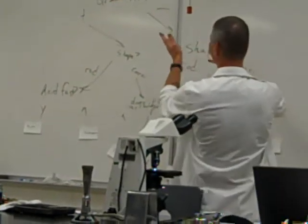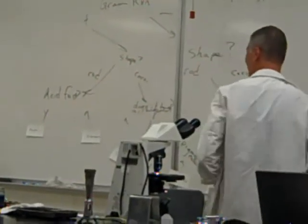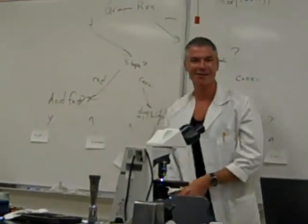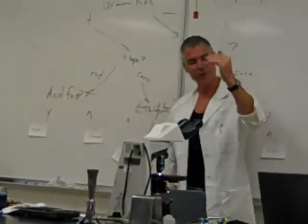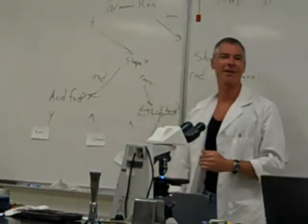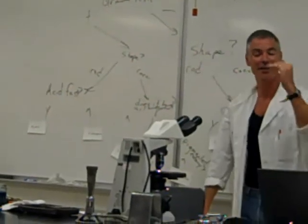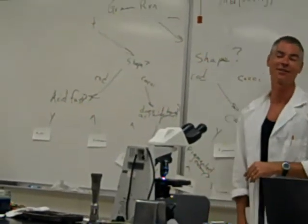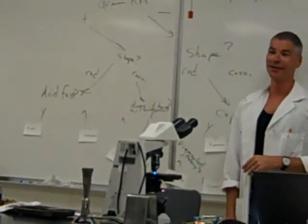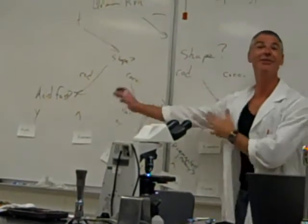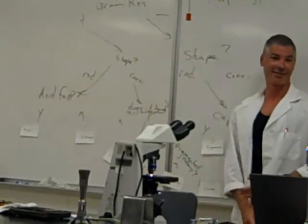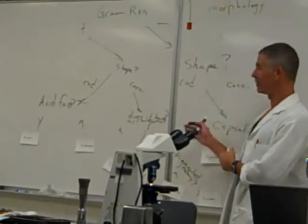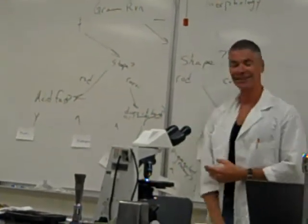The only two genera that make spores are Clostridium and Bacillus, and they're both gram-positive rods. So if you've got something that's a gram-negative rod, don't do an acid fast stain, because the only ones that are acid fast are gram-positive rods that are mycobacterial. You don't need to do every stain — if you've got gram-negative, you don't have to do any of that.